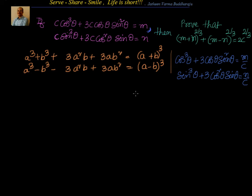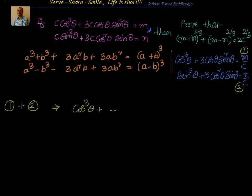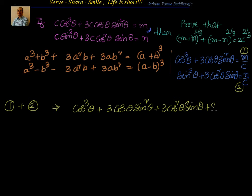Now, what happens if I do equation 1 plus equation 2? That gives me cos³θ + 3cosθ sin²θ + 3cos²θ sinθ + sin³θ, and that is equal to (m+n)/c.